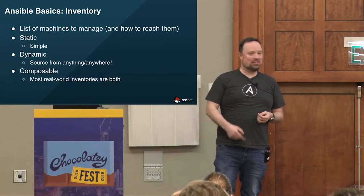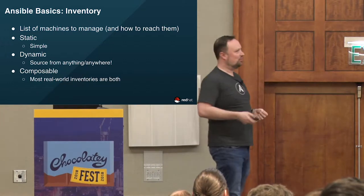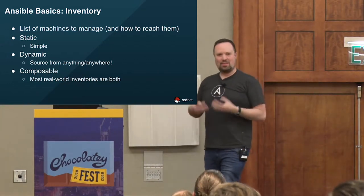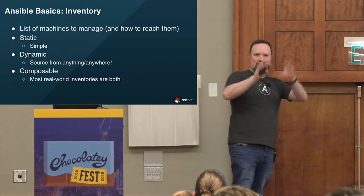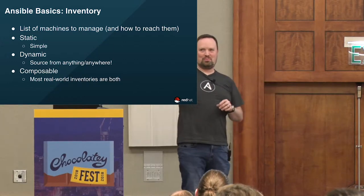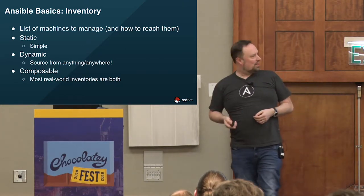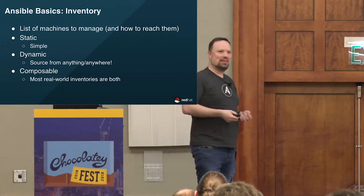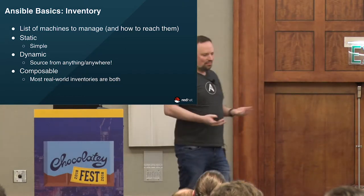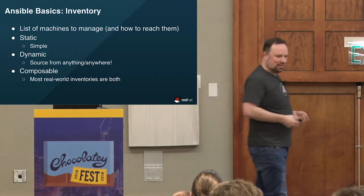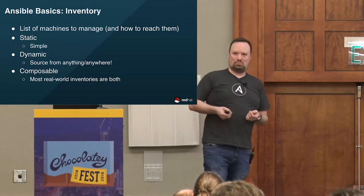Ansible can talk to just about anything. Inventory is our first building block — it's what machines we're going to talk to and how. The typical way people start is with static inventory, basically a host file where you can slice and dice things into groups: web servers, production DB servers, dev environments. Dynamic inventory is for when you're talking to a cloud provider — go tell me everything in this Azure resource group, or everything tagged like this. The dynamic inventory system is very extensible and easy to build your own.